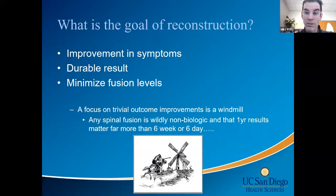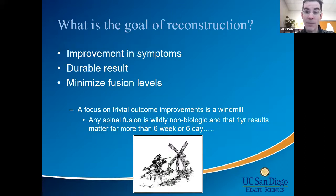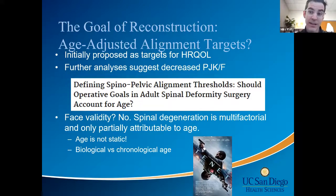What's the goal of our surgeries in sagittal plane? We want to improve symptoms. I'm still seeing articles saying 'sagittal plane doesn't matter, just decompress the nerve roots' — that's totally wrong. We want durable results. If you have engaged compensatory mechanisms after surgery, you might do well short-term, but eventually you'll degenerate and get adjacent segment disease, or your back will tucker out. We want to minimize fusion levels.